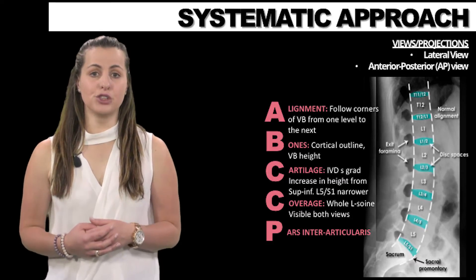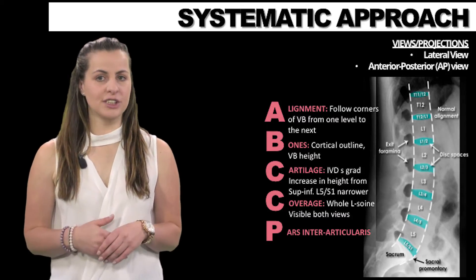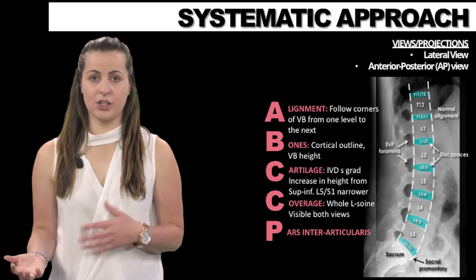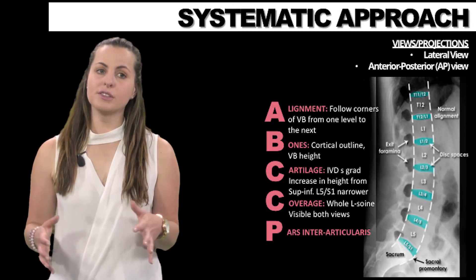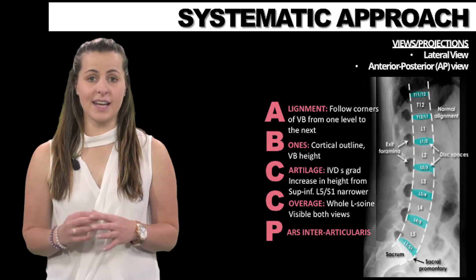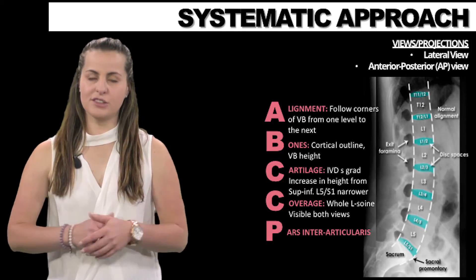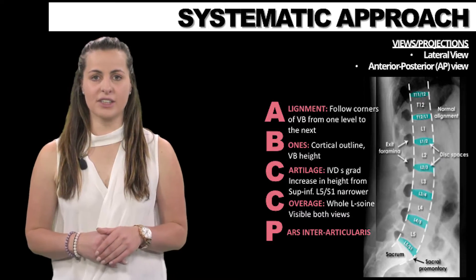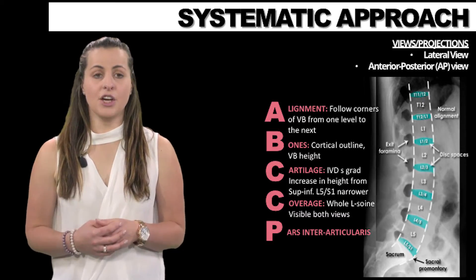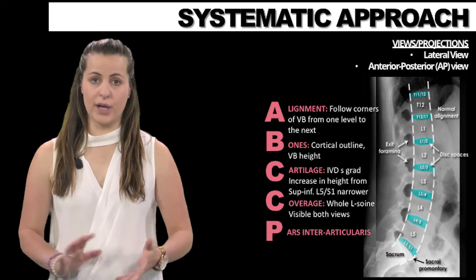The whole L-spine should be visible on both views. The disc spaces are gradually going to increase in height from superior to inferior, but note that the L5-S1 space is normally slightly narrower than the L4-L5. Lastly, we need to look at the pars interarticularis to rule out any fractures — this is particularly important for the lower spine, so L4 or L5.